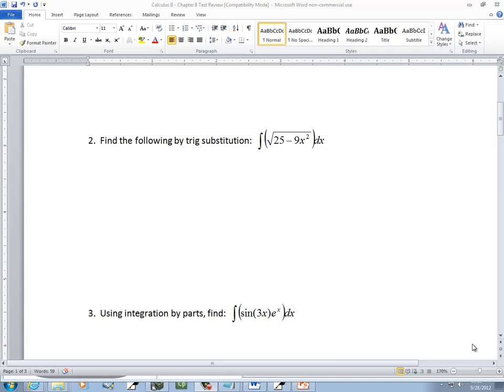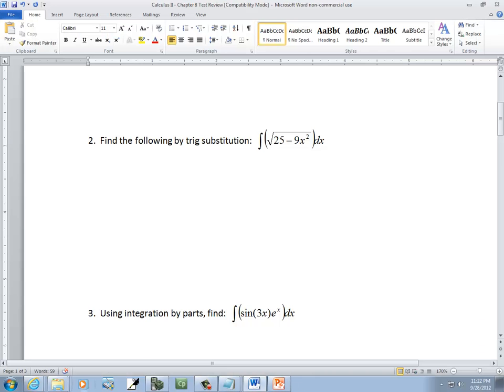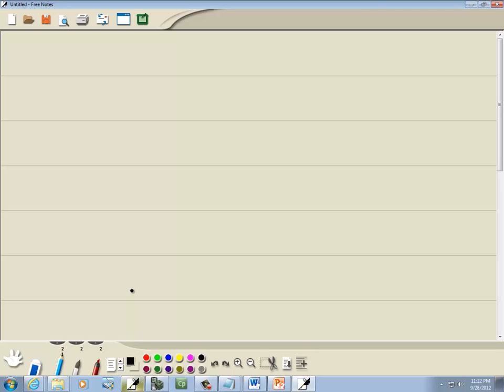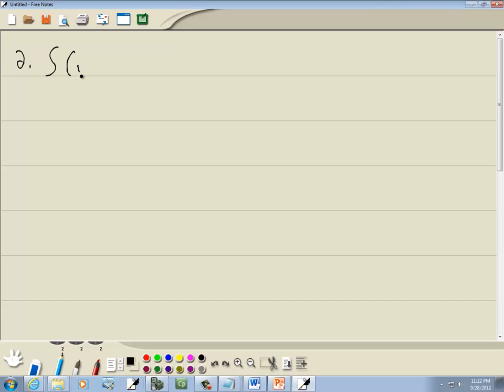Let's take a look at our second example here. We've got the square root of 25 minus 9x squared dx, which we can rewrite as 5 squared minus 3x squared dx.